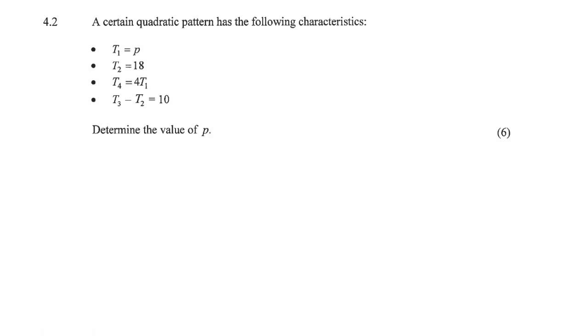A certain quadratic pattern has the following characteristics. Term 1 is P, term 2 is 18, term 4 is 4 times term 1, and term 3 minus term 2 is 10. This looks messy, right? We need to find the value of term P, but let me show you what we can do.